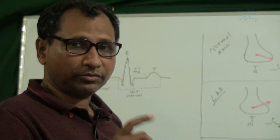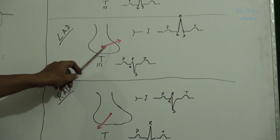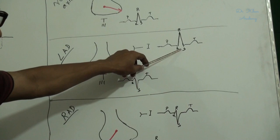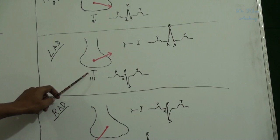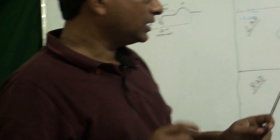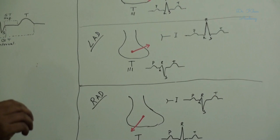In left axis deviation, the axis is deviated to the left side. This impulse passes towards lead 1, so the QRS complex is more prominent and the R wave is taller. But lead 3 shows a negative QRS complex because the impulse passes away from that lead. So when an ECG shows lead 1 with a positive QRS complex but lead 3 with a negative QRS complex, it indicates left axis deviation. Left axis deviation is usually found in left ventricular hypertrophy, left anterior hemiblock, or it may be a normal variant.